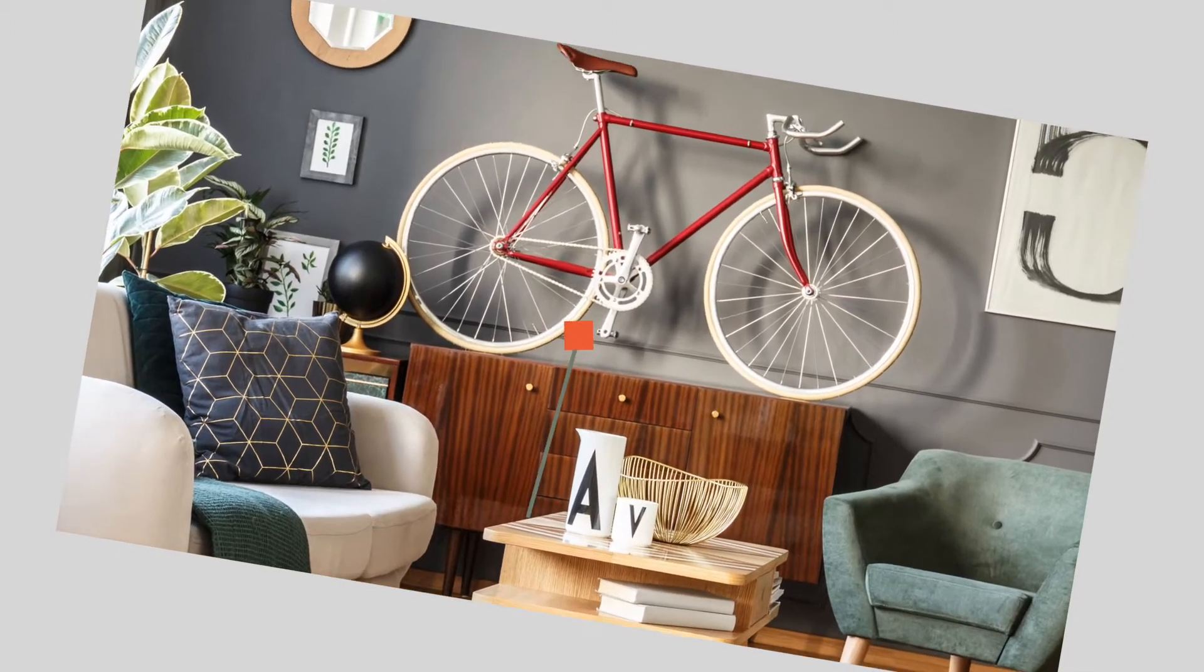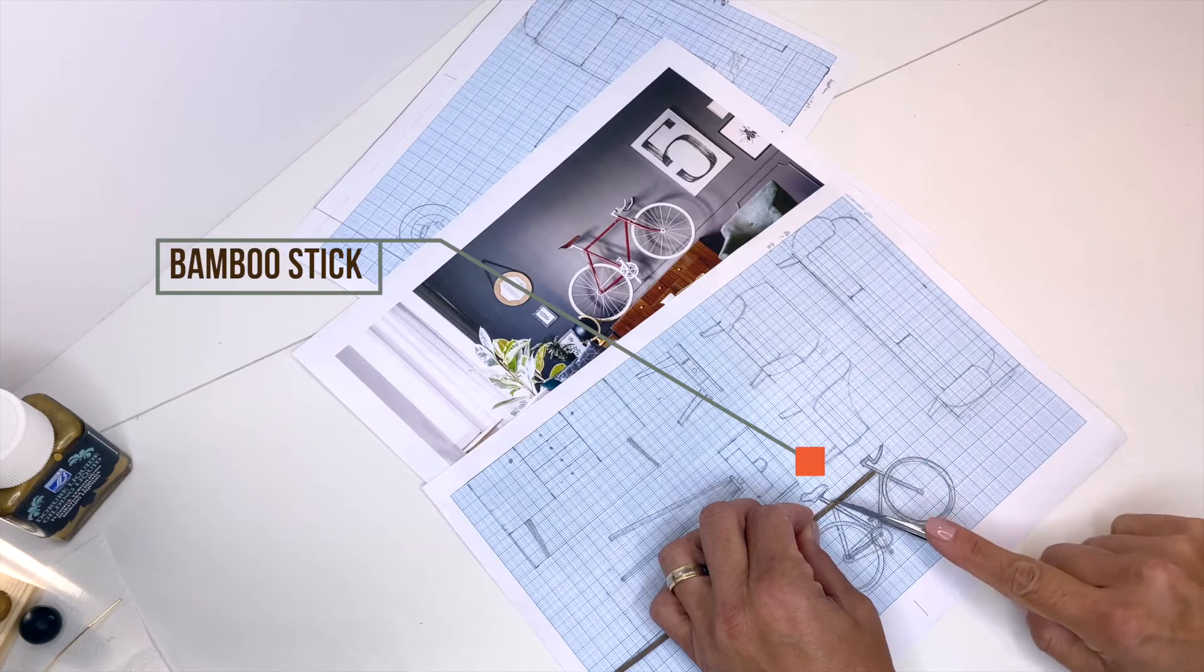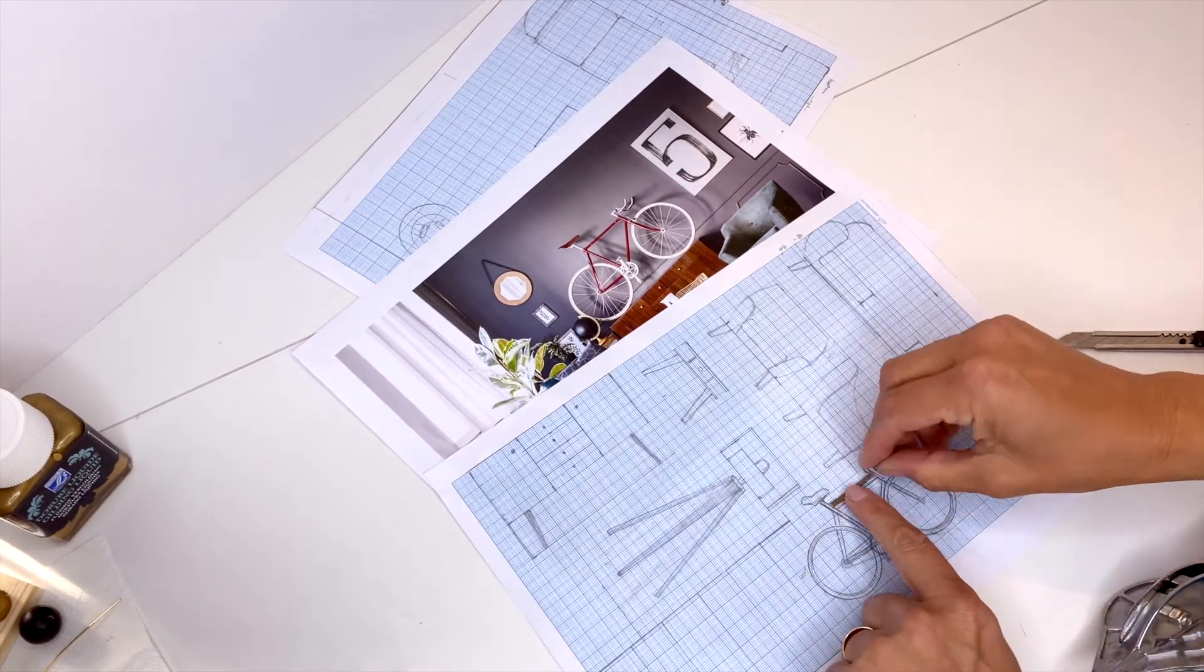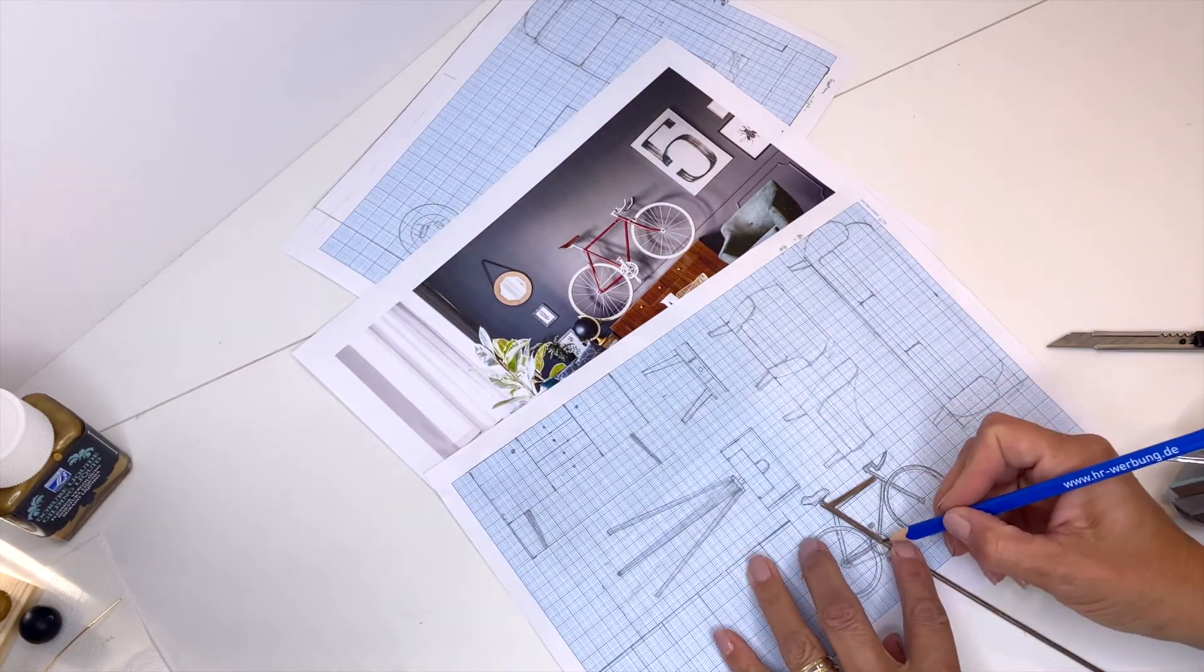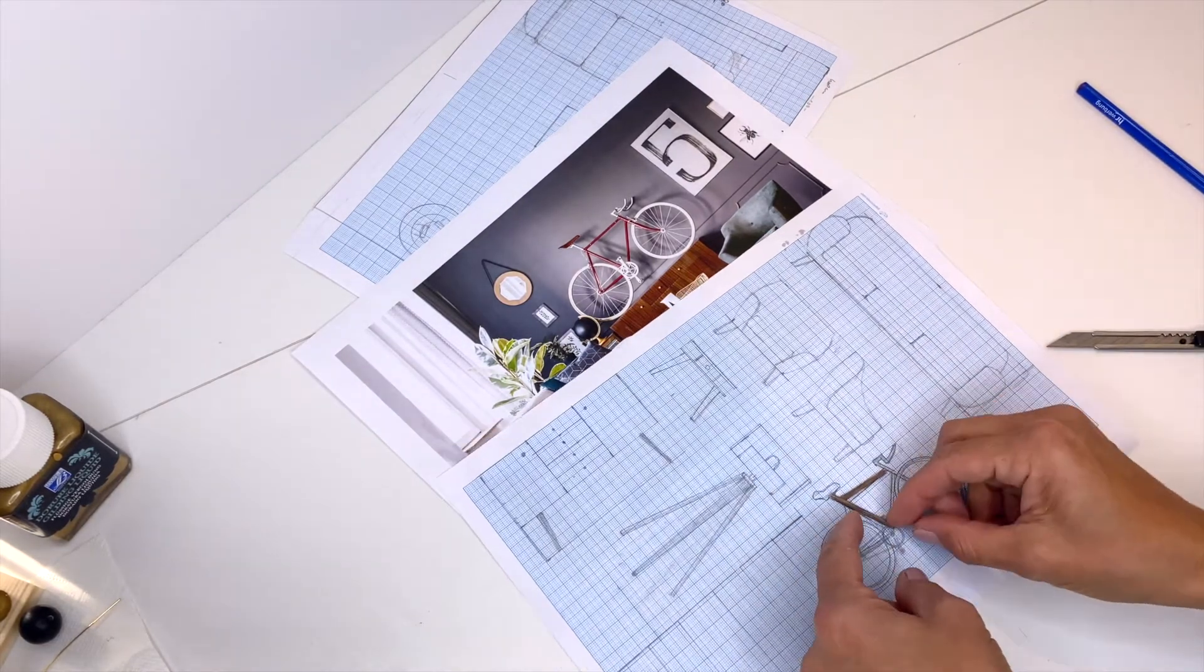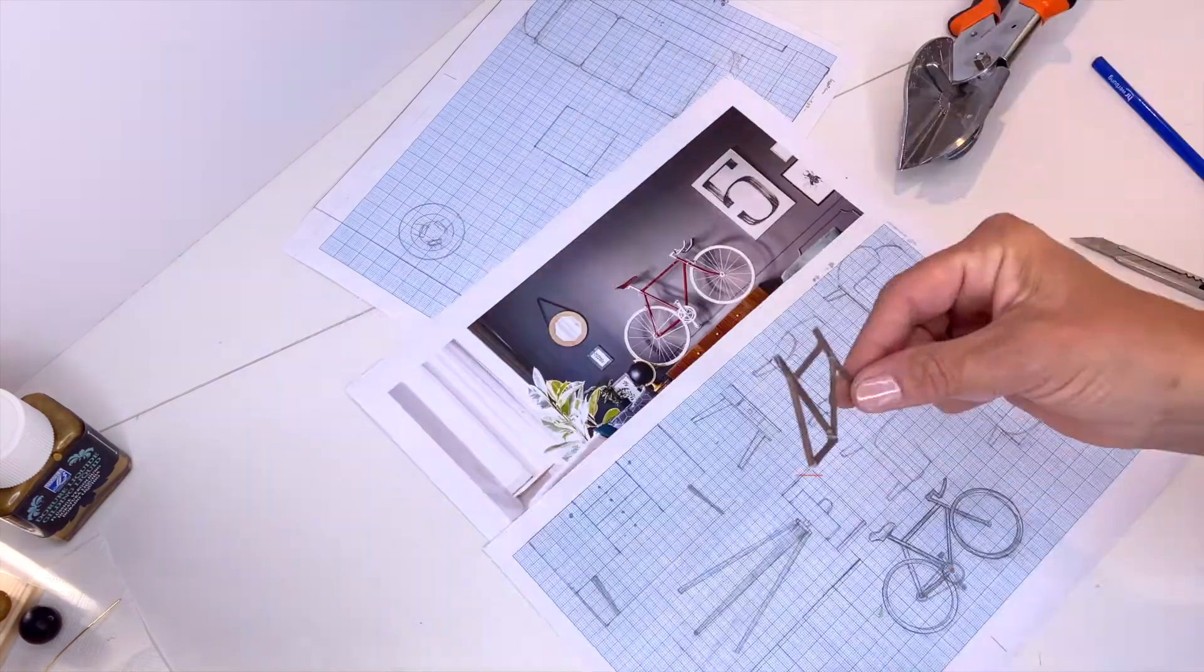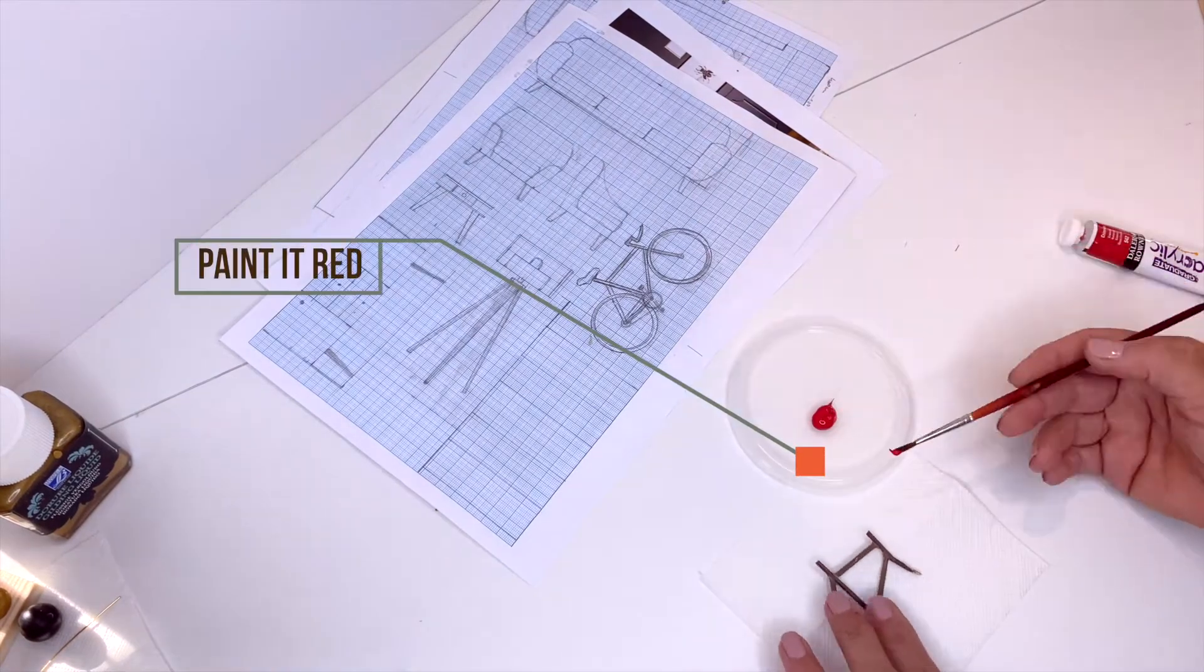Now comes the especially fun part, the bicycle. First I cut all the parts for the frame from a bamboo stick. I disassembled an old placemat for this. I try to cut the parts in the needed angle. To finish the fit, I will additionally sand the joining parts. This is the glued frame. I will give it a couple of coats of red acrylic paint.